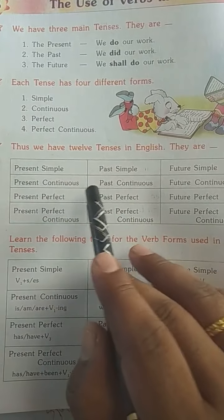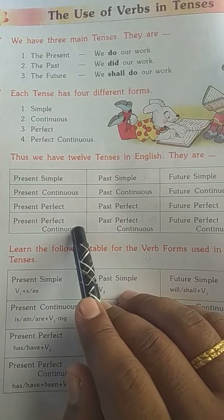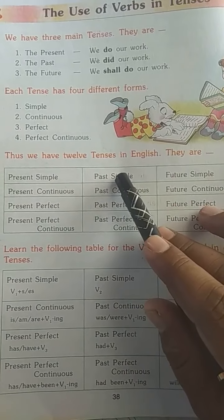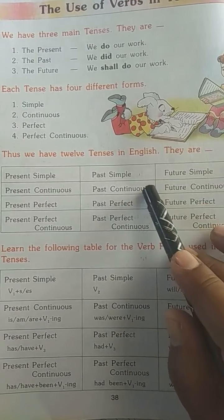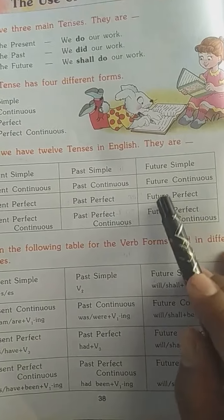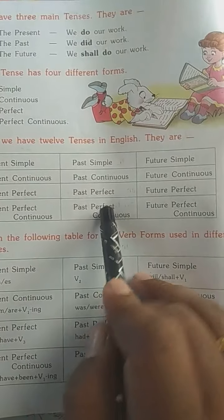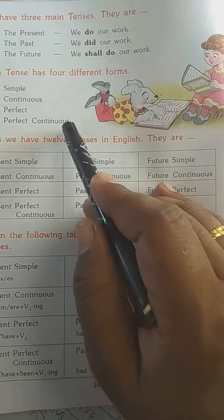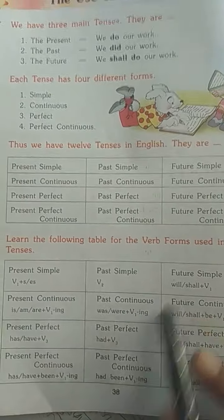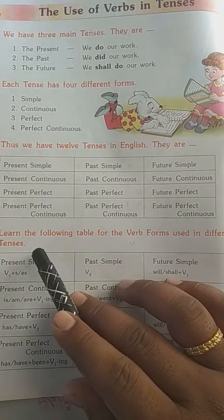Thus we have 12 tenses in English. They are: simple present tense, present continuous tense, present perfect tense, and present perfect continuous tense. Then for past: simple past tense, past continuous tense, past perfect tense, and past perfect continuous tense. And for future: simple future tense, future continuous tense, future perfect tense, and future perfect continuous tense. Each group has 4 types, making 12 in total.